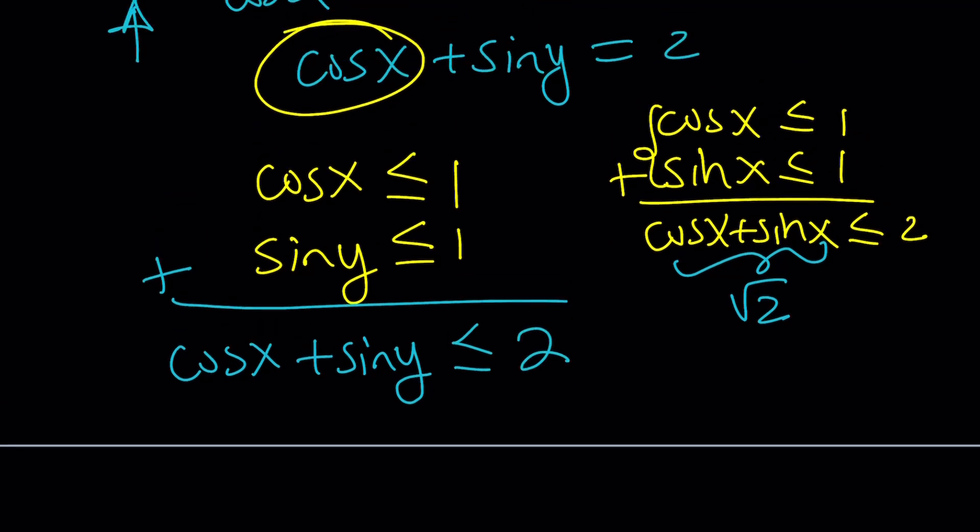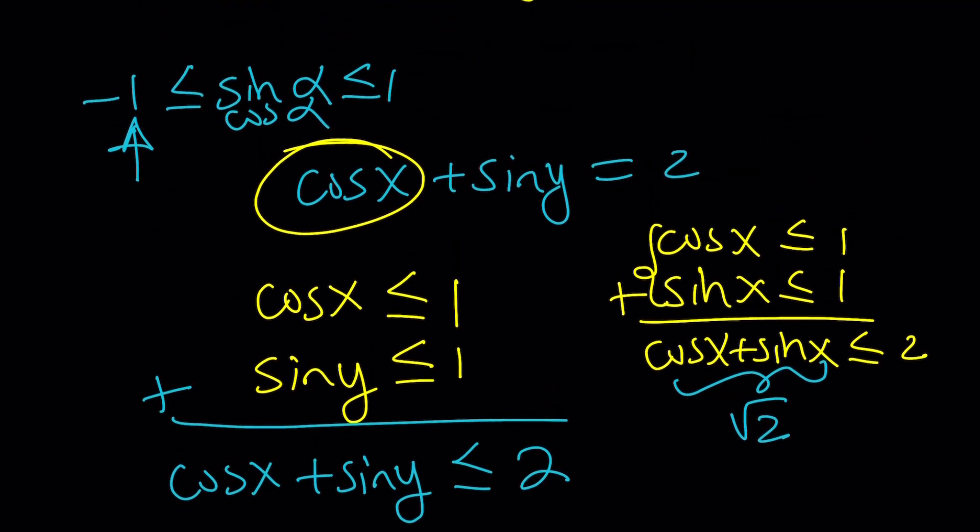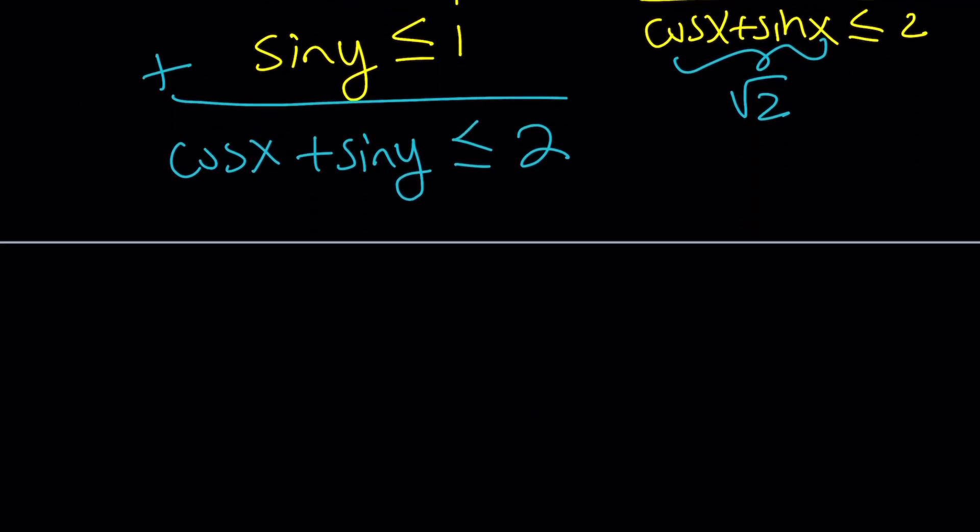But the problem claims that it's equal to 2. And obviously, it can't be greater than 2. So the maximum value it can take is 2, and it is taking the maximum value. But that's only possible if cosine x takes the maximum and sine y takes the maximum. And those values are both 1. So this implies that cosine x is equal to 1 and sine y is equal to 1.